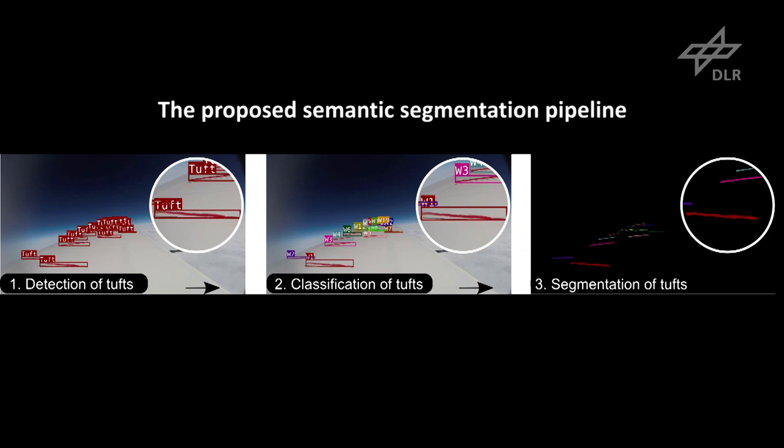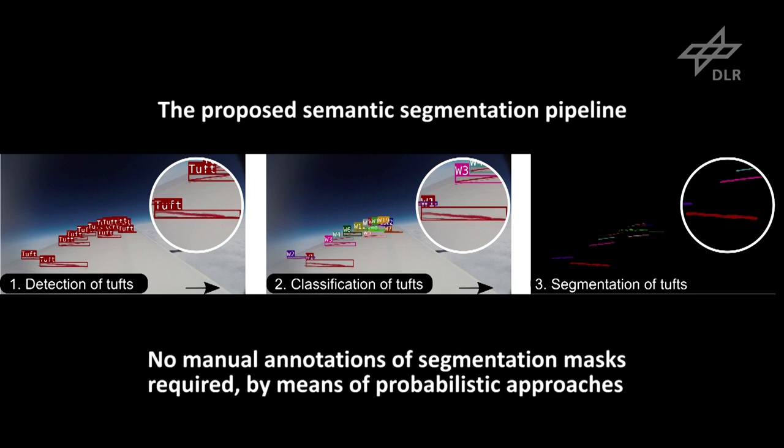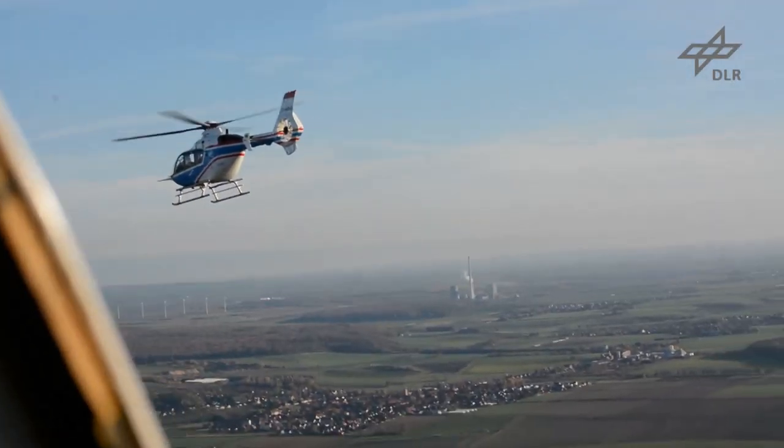So how does it work? We propose a semantic segmentation pipeline as shown here. The key idea is to divide the problem into three simpler sub-problems: detection of tufts, classification of tufts, and using the extracted foreground to perform instance segmentation. In the paper, we show in detail how uncertainty-driven methodologies can tackle each of these sub-problems, facilitating the learning process without requiring any manual annotations of semantic segmentation masks.